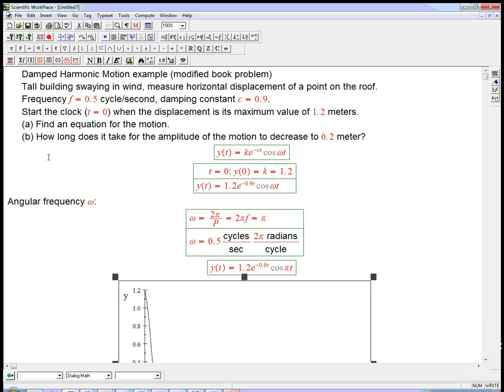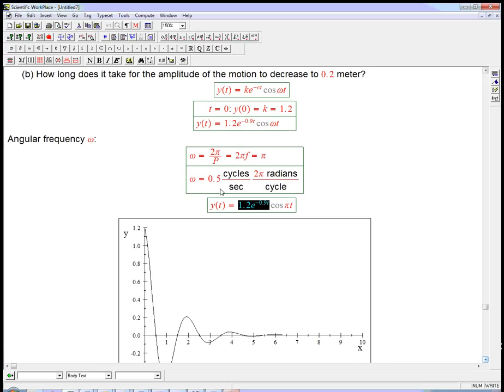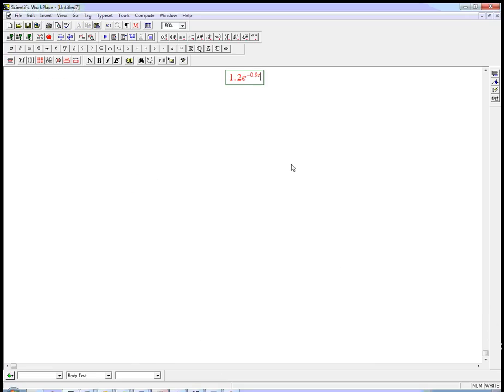How can we answer this question? How long does it take for the amplitude of the motion to decrease to 0.2 meter? The important thing is that the amplitude is everything in front of the cosine. We're really getting a cosine times this decaying function. That's why it's bouncing back and forth between decaying limits. So we just need to solve 1.2e^(-0.9t) equals 0.2. So e to the minus 0.9t equals 0.2 over 1.2, which is 1 sixth.